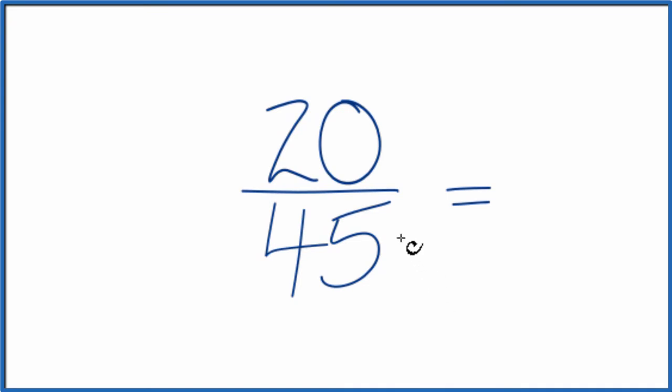To do that, we need to find a factor common to both 20 and 45. We're actually looking for the greatest common factor.